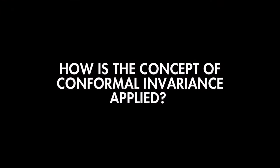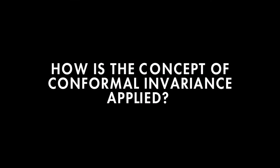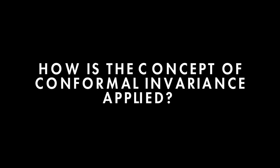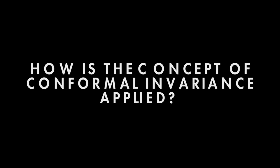How is the concept of conformal invariance applied at the beginning and end of each cycle in the Conformal Cyclic Cosmology model? How does this affect our understanding of space and time?